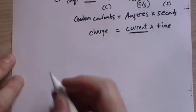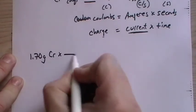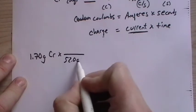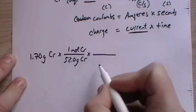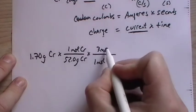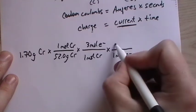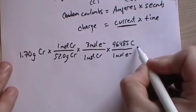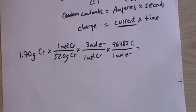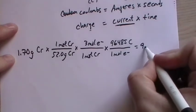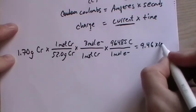So how we do it is we take 1.70 grams of chromium. This is deposited. This is 52.0 grams of chromium per mole of chromium. Now we look at the reaction for every mole of chromium, there were three moles of electrons used to create it. And then we have, for every mole of electrons, according to Faraday's constant, we have 96,485 coulombs of charge. Massive amount. So we have 1.7 divided by 52 times 3 times 96,485. And that gives us 9.46 times 10 to the third coulombs.